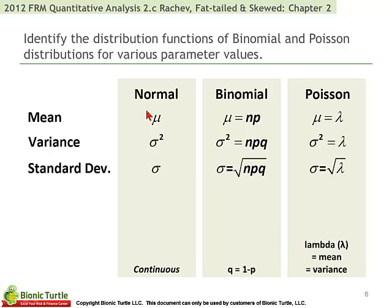Just to compare the binomial and Poisson to the normal — and please note the normal is continuous, as I'm sure you know — the normal is also very parsimonious: only two parameters, mean and dispersion, sigma squared for the variance. And with all of these, the standard deviation is the square root of the variance.